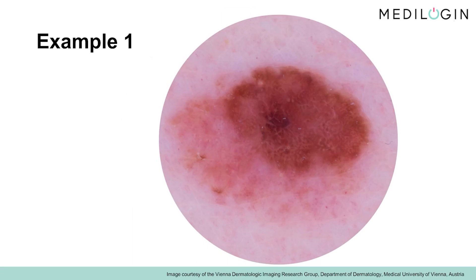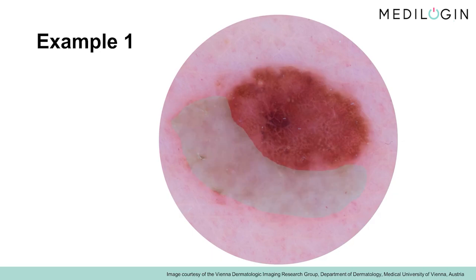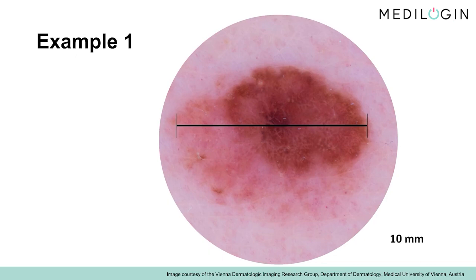Let us start with the first melanoma, and judge it using the interpretation algorithm. At first glance, one recognizes an asymmetry of both geometry and coloring. The lesion is peripherally poorly defined. You'll recognize two different colors, these are asymmetrically distributed. The diameter is approximately 10 mm. The ABCD rule alone suggests the diagnosis of melanoma.